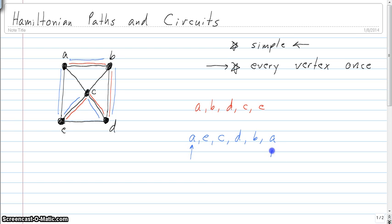It's okay to repeat that first vertex since it's a circuit. So we didn't repeat any edges and we used every vertex exactly once. Those are the ideas of Hamiltonian paths and circuits.